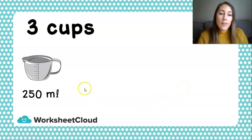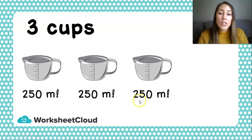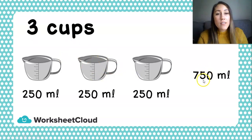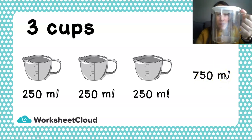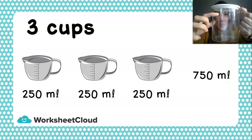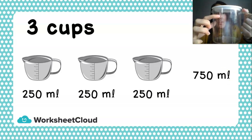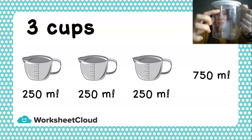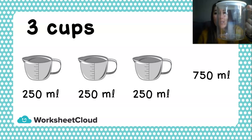Three cups. If I have three cups, and remember each cup is 250 milliliters, instead of adding them together every single time, I just need to remember that three cups is 750 milliliters. If I look at my measuring cup, over here is 750 milliliters. So: 250 milliliters is one cup, 500 milliliters is two cups, and 750 milliliters is three cups.